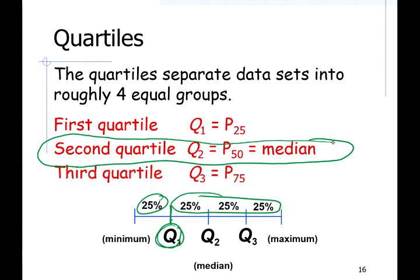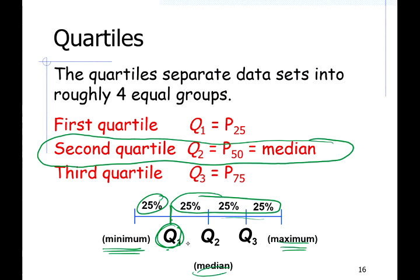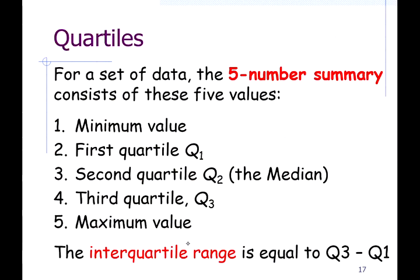These three quartiles, along with the minimum and the maximum, make five numbers collectively called the five number summary. The first quartile is basically the median of the first half, and the third quartile is the median of the second half. We use the five number summary to analyze and graph the distribution of a set (via box plots), to compare distributions between different sets, and to identify outlying values.